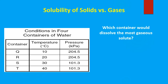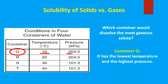Which container would dissolve the most gases? We have to take into consideration both temperature and pressure. Gases are most soluble at low temperature and high pressure, so we look for the lowest temperature with the highest pressure, which would be container Q — it has the lowest temperature and the highest pressure.